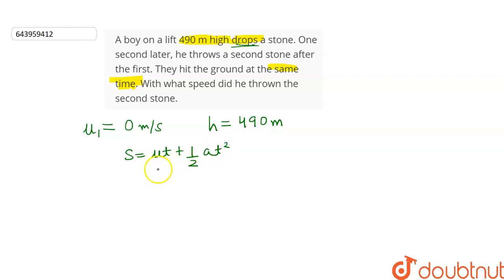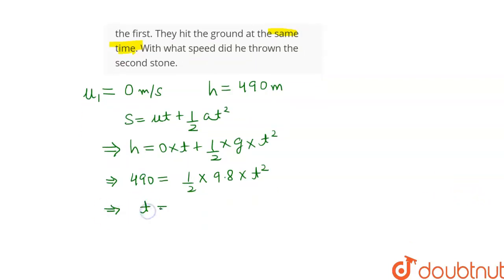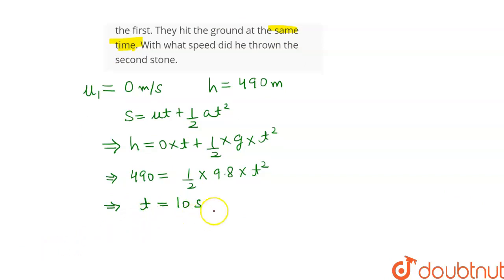We can calculate the time which the stone takes to fall to the ground. In this case, the distance is equal to the height, so this can be written as h equals 0 into t plus 1 by 2. The acceleration acting on the stone is equal to the acceleration due to gravity, which is g into t square. Let's put the values: h equals 490 meters, 1 by 2, the acceleration due to gravity is equal to 9.8 meters per second square. After simplifying this, we get t equals 10 seconds. So the time taken by the first stone to reach the ground is 10 seconds.